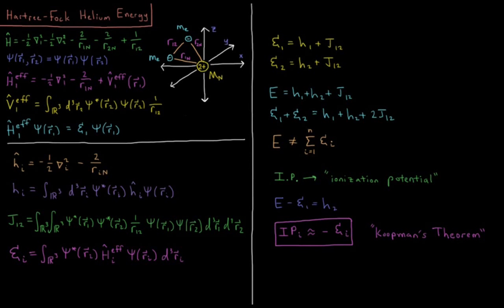This video will further discuss the components of the Hartree-Fock energy for the helium atom. We have a nucleus of charge 2+ fixed at our Cartesian origin and two electrons which are free to move anywhere in three-dimensional Cartesian space. Electron 1 is a distance r1n from the nucleus and is attracted to it; electron 2 is a distance r2n from the nucleus and is attracted to it, and the electrons repel each other and are some distance apart.